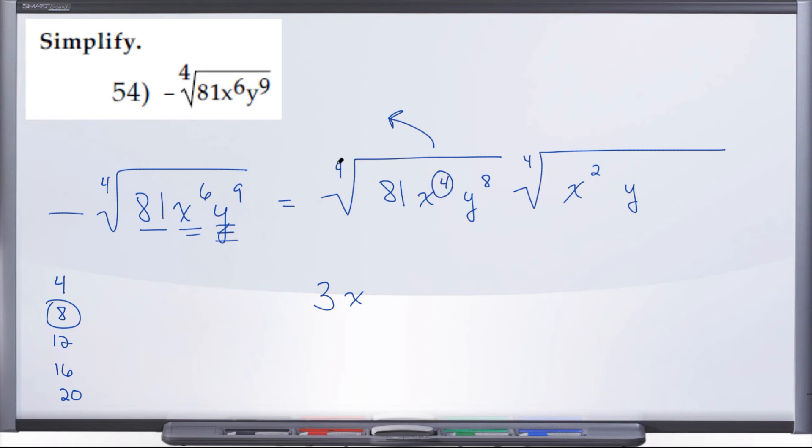So in this case, four divided by four gives us one. So when this x comes out of the radical, it comes out as x to the first, because four divided by four is one. But we don't ever write one as an exponent, right?